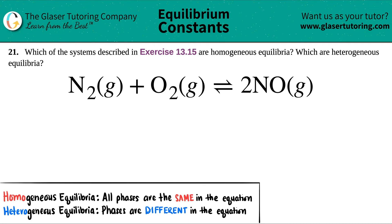Number 21. Which of the systems described in exercise 13.15 are homogeneous equilibria and which are heterogeneous equilibria?